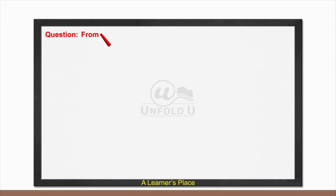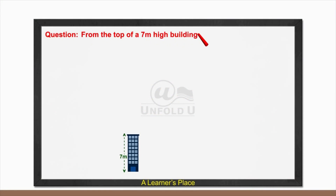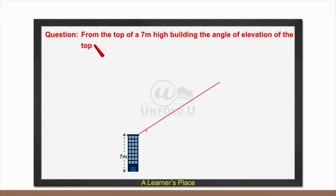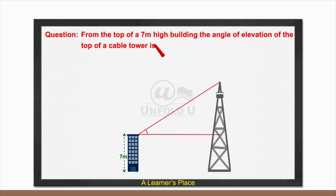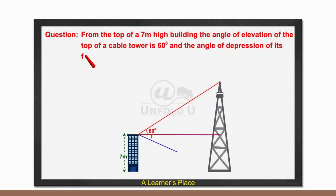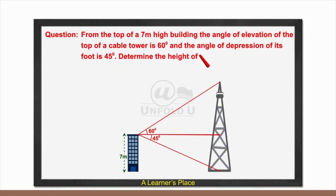From the top of a 7-meter high building, the angle of elevation of the top of a cable tower is 60 degrees and the angle of depression of its foot is 45 degrees. Determine the height of the tower.